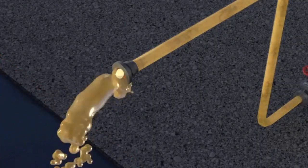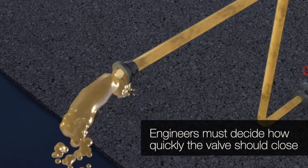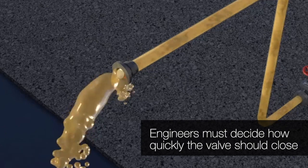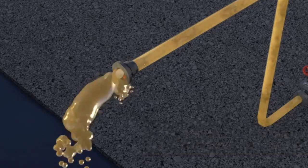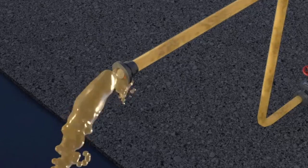Should a ship break away from the dock, engineers must decide how quickly the valve should close. A 30-second, slow-closing valve may decrease the initial surge in pressure, however thousands of gallons of fuel would be discharged to the environment.